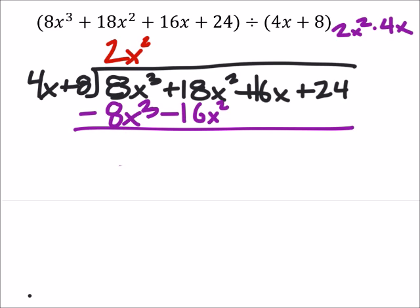So we canceled out those x cubed with the 8x cubed, which is what we wanted. Now we have that 18x squared minus 16x squared, which leaves us with 2x squared.